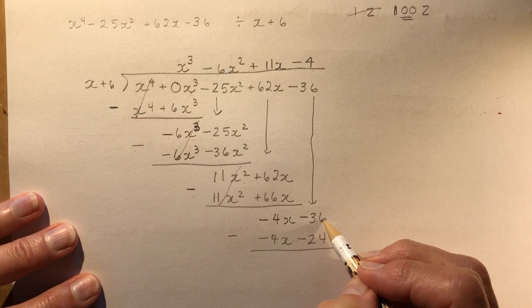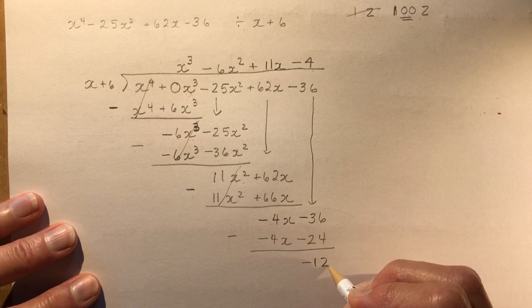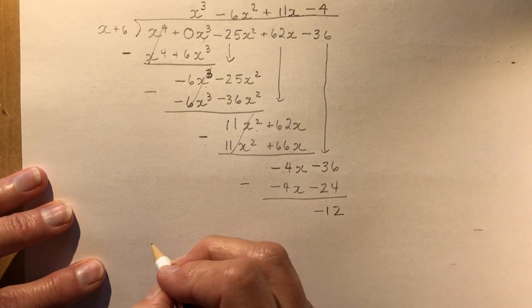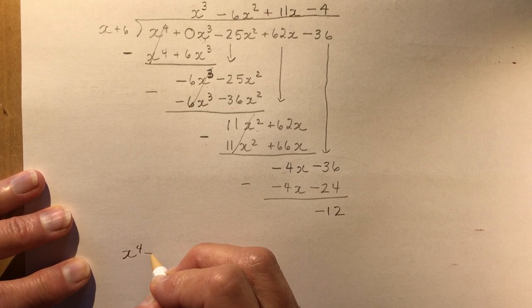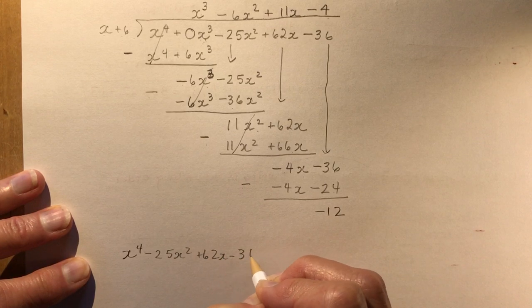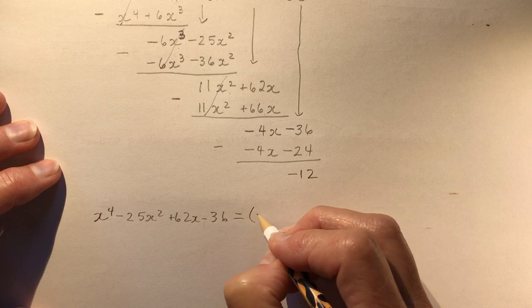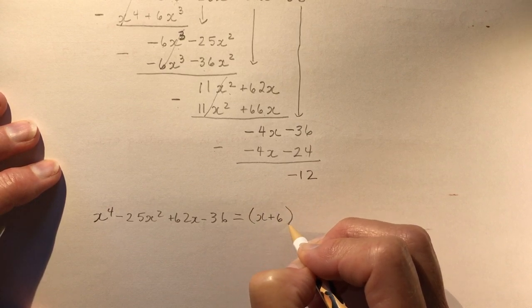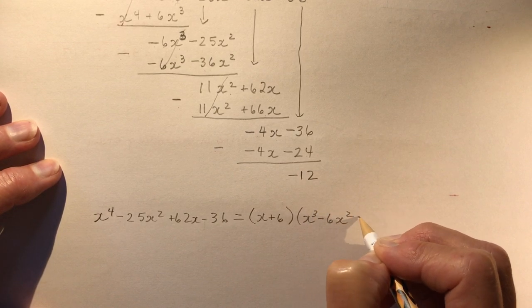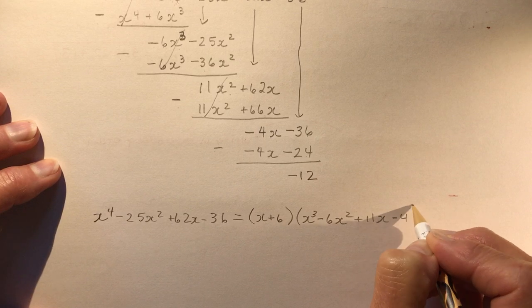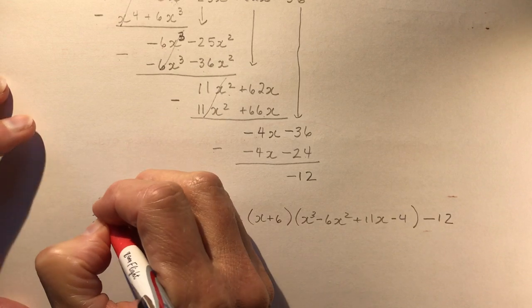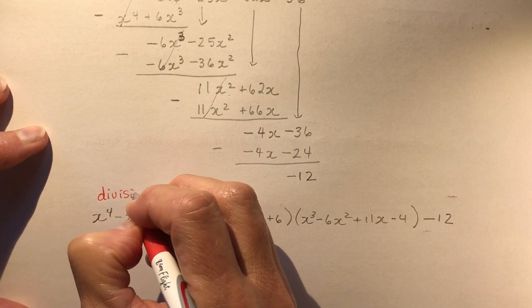Subtract again: minus 36 plus 24 gives negative 12 as the remainder. The division statement is: x⁴ minus 25x² plus 62x minus 36 equals (x plus 6) times (x³ minus 6x² plus 11x minus 4) minus 12. Write out the full division statement — you're going to be asked for that.